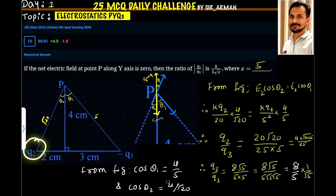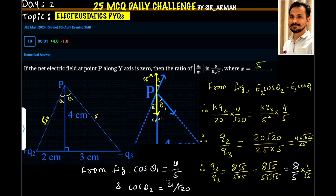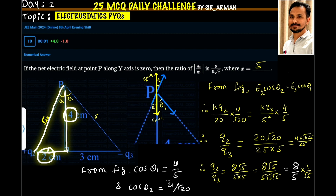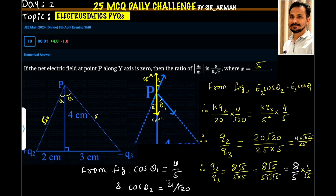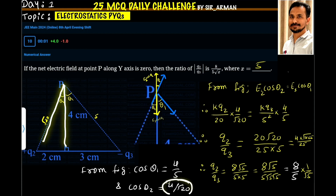The electric field due to a charge is given by KQ by R squared. For E2, the distance R is root of 4 squared plus 2 squared, which is root of 16 plus 4, equal to root 20. Squaring it gives 20, so E2 equals KQ2 by 20. For cos theta 2, the adjacent side is 4 and hypotenuse is root 20, so cos theta 2 equals 4 by root 20.